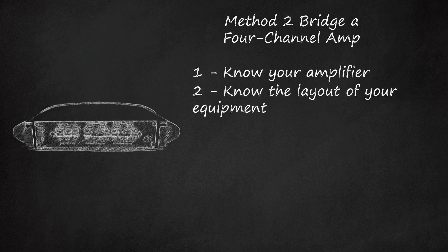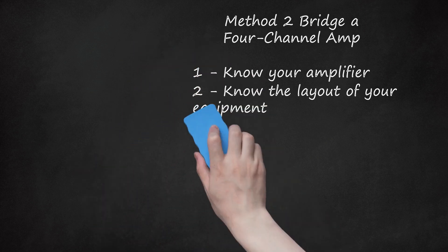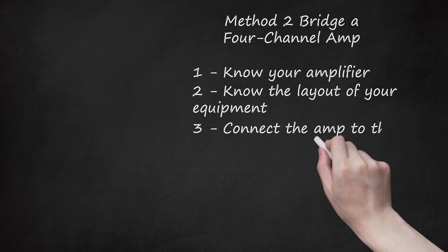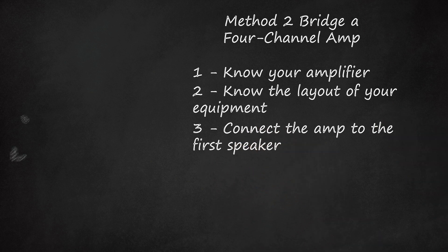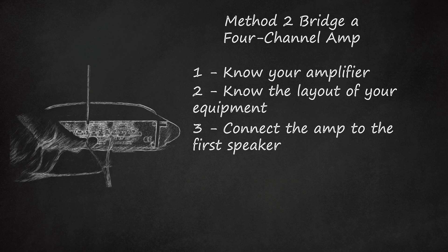Step 3: Connect the amp to the first speaker. From the wires coming out of the speaker, connect the positive speaker lead to terminal A, the positive for channel 1, and connect the negative speaker lead to terminal D, the negative for channel 2.